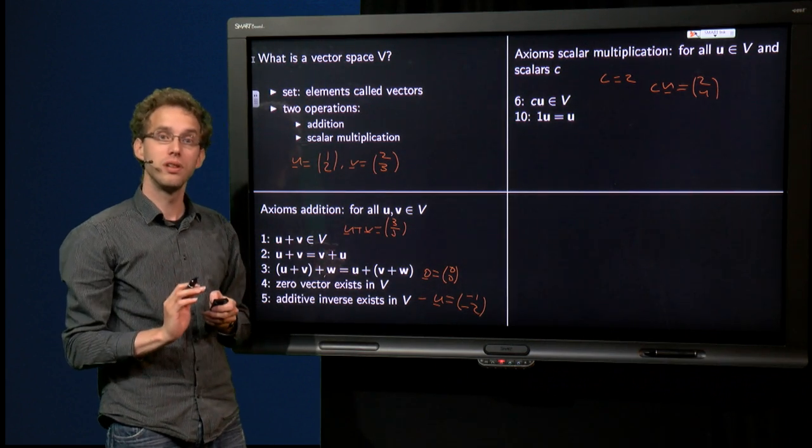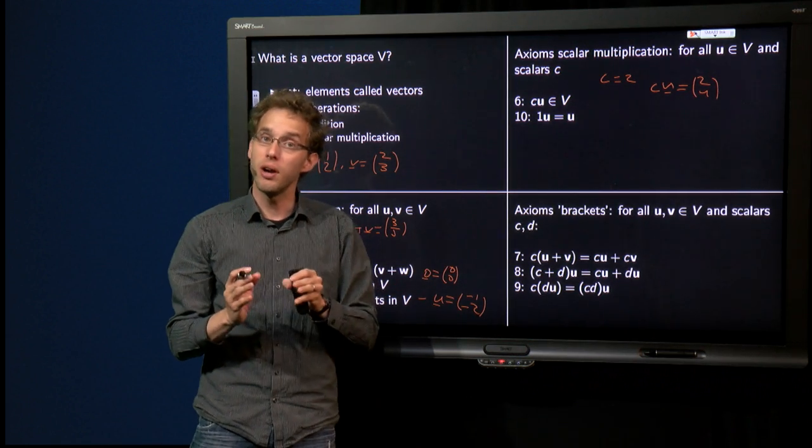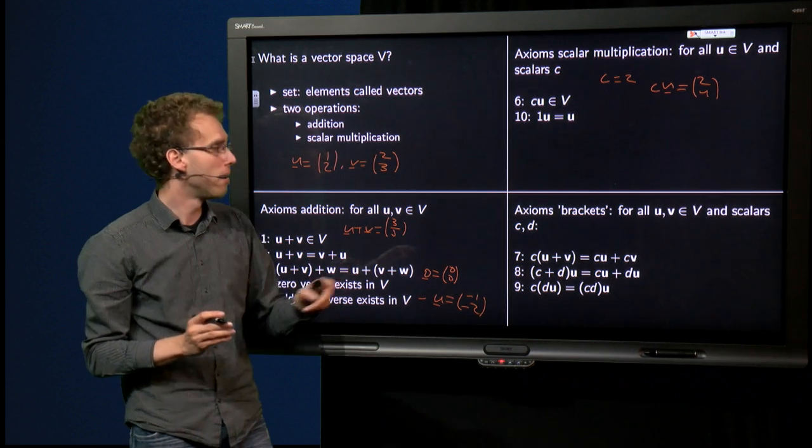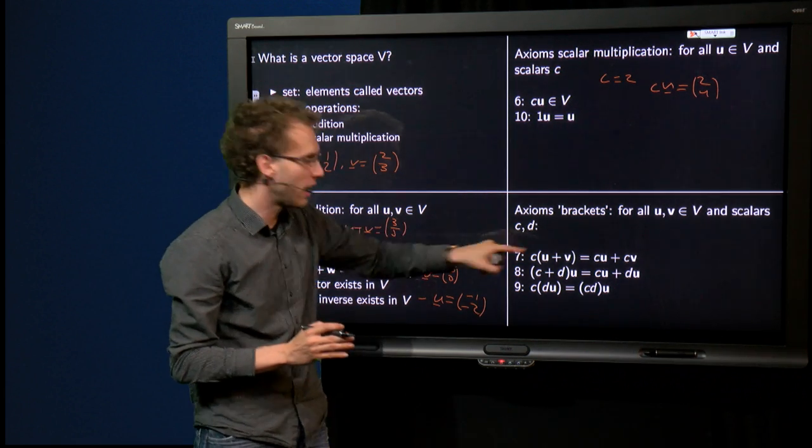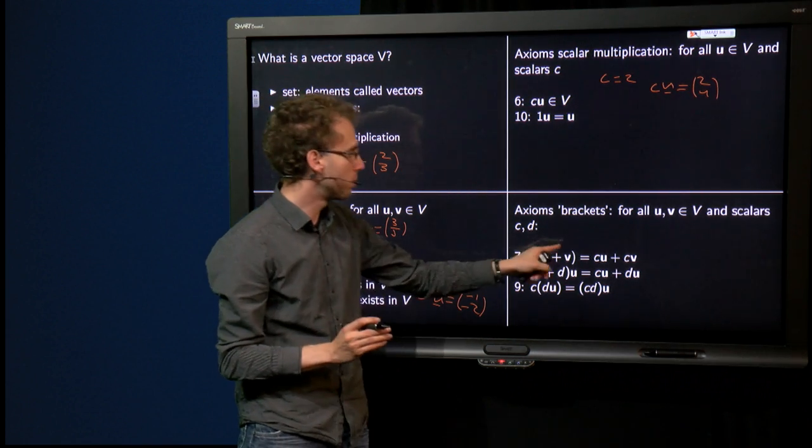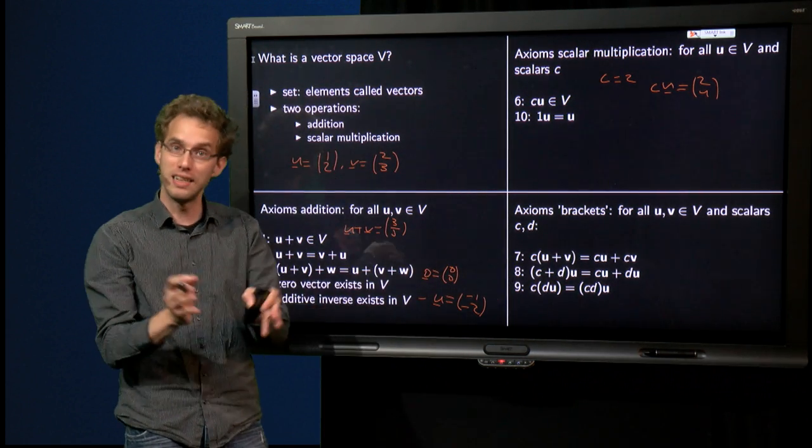On to the last three, the brackets. If we have (u plus v) times scalar c, then it doesn't matter whether we first add u and v and then multiply by c, or first compute c times u and c times v and then add up.